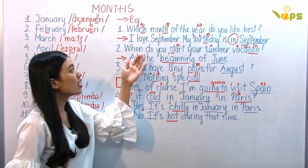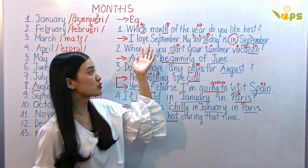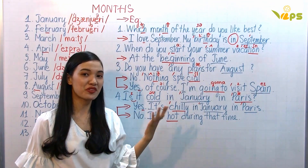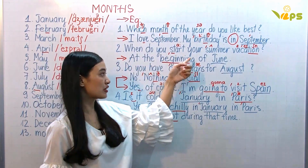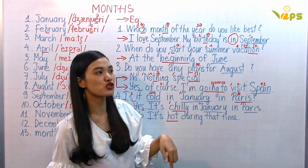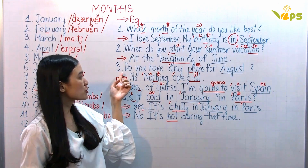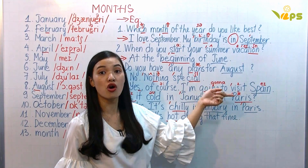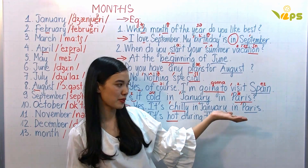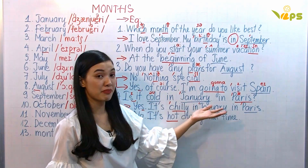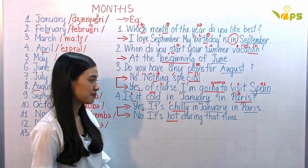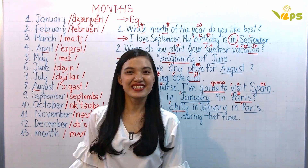Again: Which month of the year do you like best? I love September — my birthday is in September. When do you start your summer vacation? At the beginning, end, or middle of June. Do you have any plans for August? No, nothing special. Yes, of course, I'm going to visit Spain. Is it cold in January in Paris? Yes, it's chilly. Or no, it's hot during that time. That's all for today. Goodbye, see ya, bye, thank you.